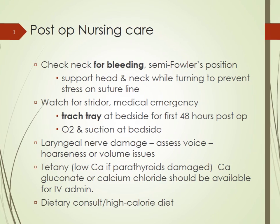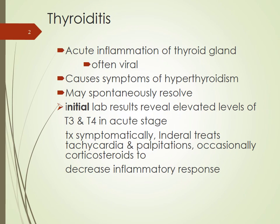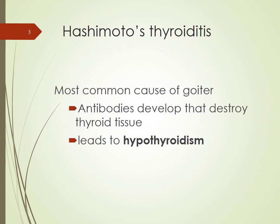Thyroiditis is inflammation of the thyroid, usually in response to a viral condition — it can resolve as acutely as it begins. Hashimoto's thyroiditis is the most common form of hypothyroidism, just as Graves' disease is the most common form of hyperthyroidism. Hashimoto's is an autoimmune disorder where the thyroid attacks its own tissue due to developed antibodies. It is a slow, chronic, progressive disorder that happens over time.